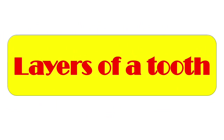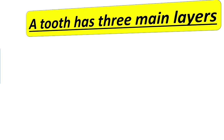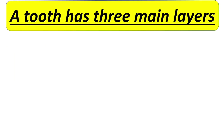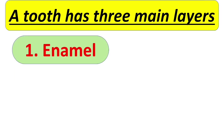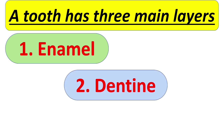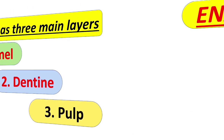Next is the layers of a tooth. A tooth has three main layers: enamel, dentine, and pulp. Let us have a look at them in detail one by one.